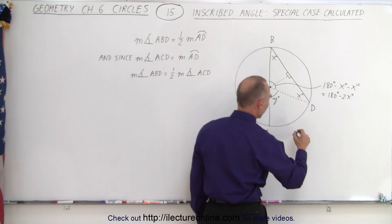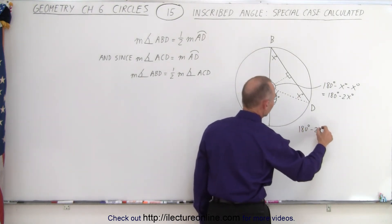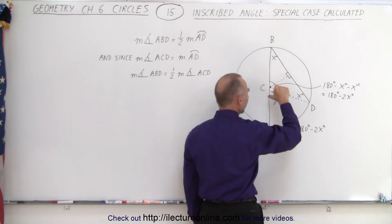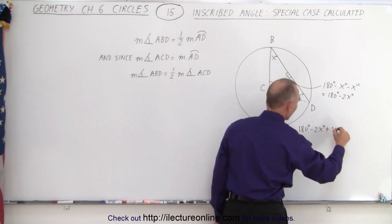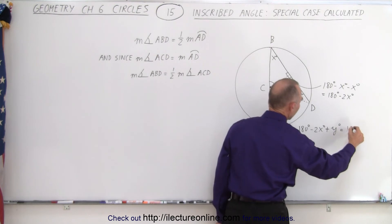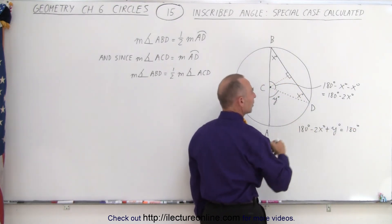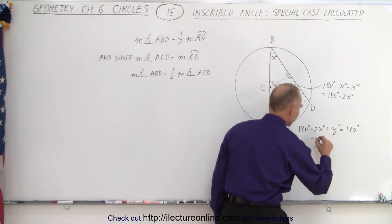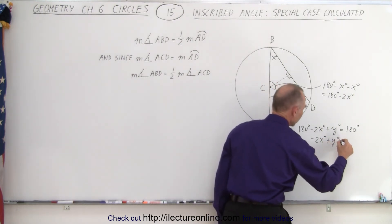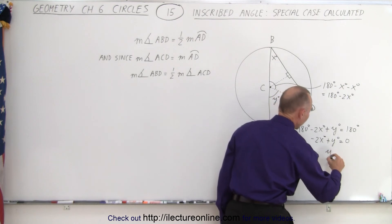So therefore I can say that 180 degrees minus 2x degrees which is this angle plus y degrees that must add up to 180 degrees. So 180 degrees cancels on both sides so we end up with minus 2x degrees plus y degrees equals zero or y degrees equals 2x degrees.